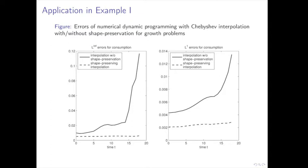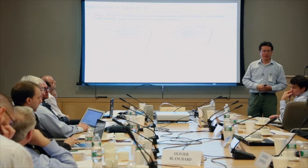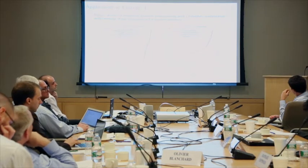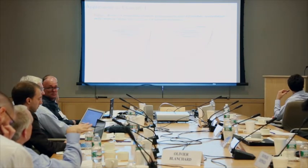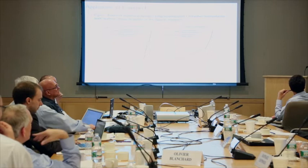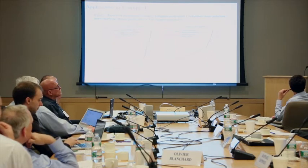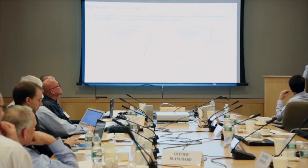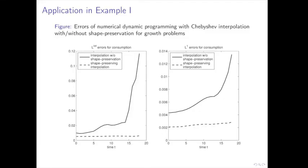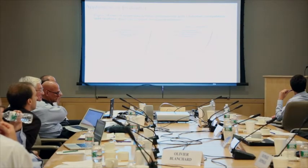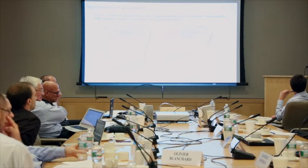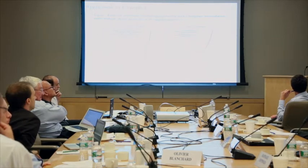Consider an example with four points. Without shape preservation, you can approximate the data nodes perfectly but get many oscillations — wiggles in between. With shape preservation, the function is well-behaved. The approximation nodes are perfectly fit in both cases, but without shape preservation the function oscillates badly between nodes.